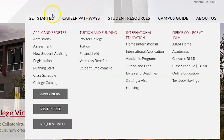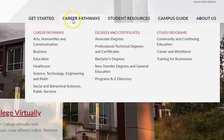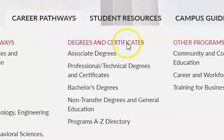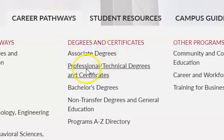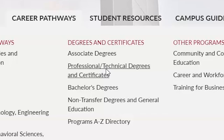I'm going to show you on our website how you find the degrees that are either or. So I'm hovering over Career Pathways, going down to Degrees and Certificates, and you'll notice it says Associate Degrees, and then there's Professional Technical Degrees and Certificates. The degrees within the Professional Technical Degrees are Associate Degrees as well — they're just not the same kind as these ones here.